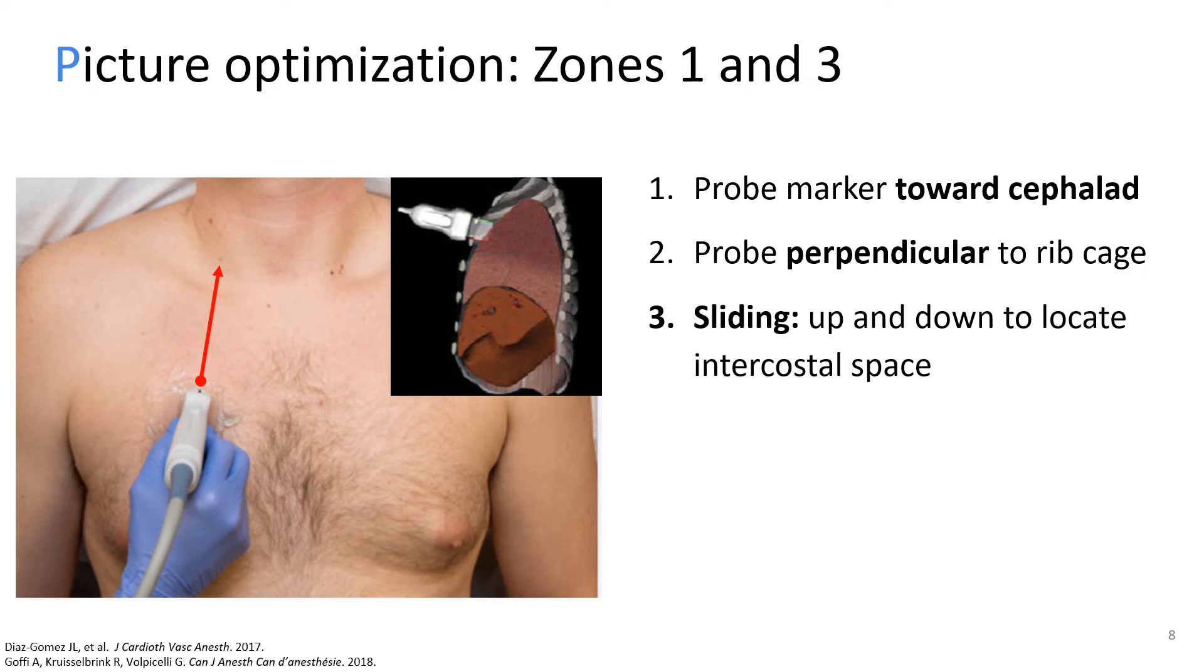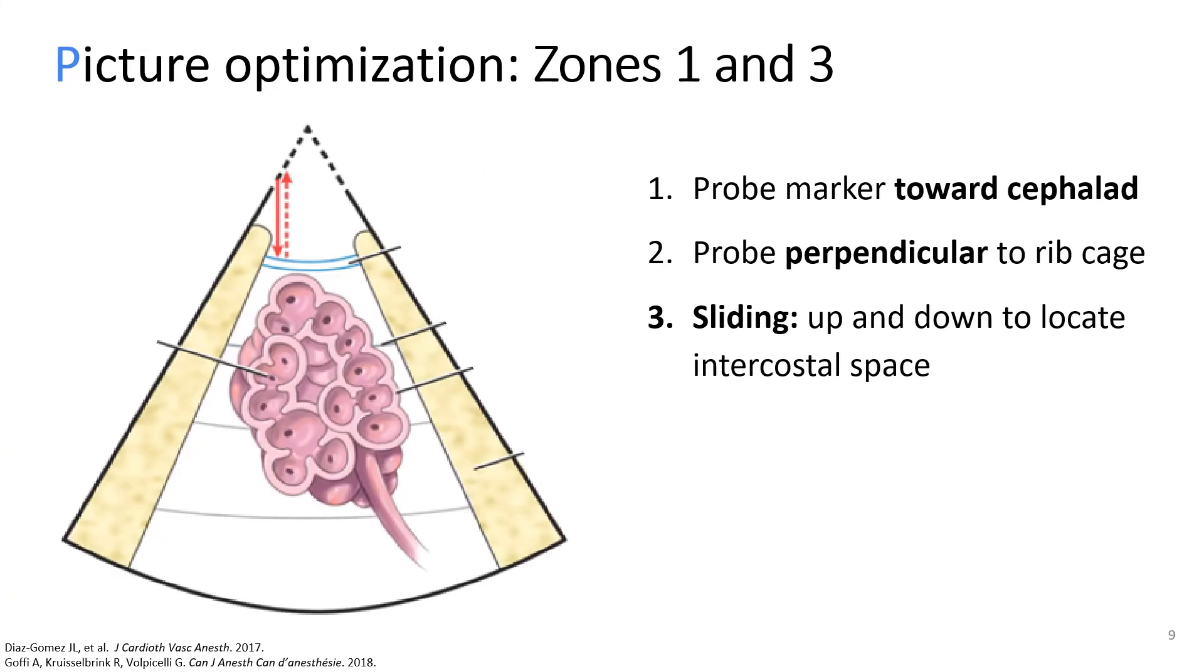But wait, how is that you can tell where you are over an intercostal space or not? Well, ribs will look like black shadows. And in between two ribs, you should see the pleural line as a bright horizontal line. The goal is to slide up and down your probe until you see an image where there are rib shadows on each side of the screen and the horizontal pleural line right in the center, just as you see in this image. You see in the center, there is the alveoli, which is air-filled. And on top of it, you see a blue horizontal line, which is the pleural line. And on each side, you see the ribs with the projected shadow. But now let's see it in real life.